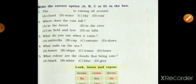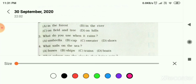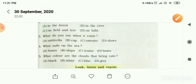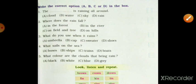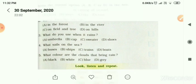First, the blank is raining all around. So, A cloud, B water, C sky and D rain. So answer is D rain.